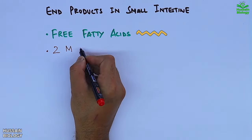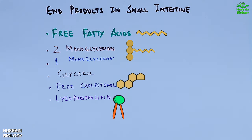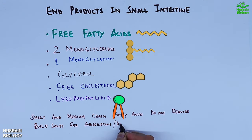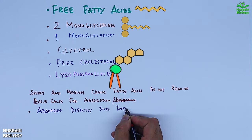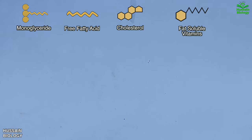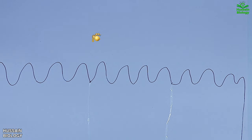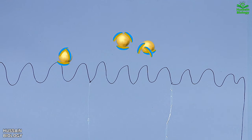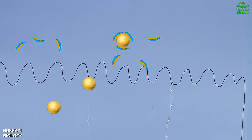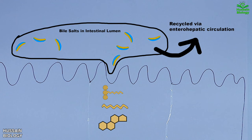The end products in the small intestine from digestion of fats are: free fatty acids, 2-monoglyceride, glycerol, free cholesterol, and lysophospholipids. It must be noted that short-chain fatty acids do not need emulsification by bile salts; they are directly absorbed by intestinal cells and into portal circulation. Monoglycerides, fatty acids, cholesterol, and some fat-soluble vitamins are packed into minute particles called micelles. Micelles have a lipid core surrounded by bile salts, and they bind with the brush border, releasing their core products — free fatty acids, monoglycerides, and cholesterol — into enterocytes. The bile salts remaining in the lumen are recycled by enterohepatic circulation, returning to the liver via the portal system.